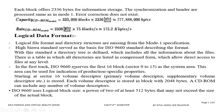The first 16 block sectors (sector 0 to 15) form the system area, which can be used for indicating product and specific properties. Starting at sector 16, there is a volume descriptor. Each volume descriptor is stored in a block with 2048 bytes, and a CD-ROM can include any number of volume descriptors. The logical block size is a power of 2 of at least 512 bytes, and may not exceed the size of the actual block.